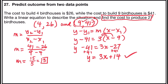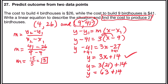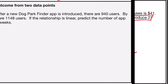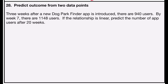Now that we have the function, we'll find the cost to produce 21 birdhouses: cost = 3(21) + 14. Using order of operations, 3 × 21 = 63, and 63 + 14 = 77. The cost to produce 21 birdhouses is $77.